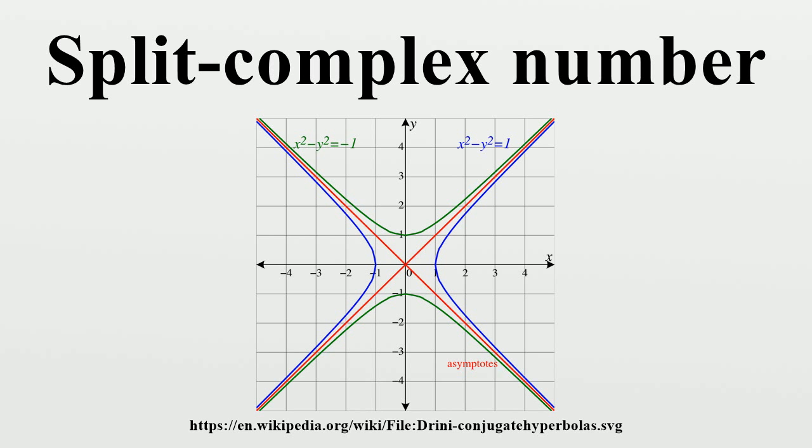If we denote the number z equals ae₊ plus be₋ for real numbers a and b by (a,b), then split complex multiplication is given by (a₁,b₁)(a₂,b₂) equals (a₁a₂,b₁b₂). In this basis, it becomes clear that the split complex numbers are ring isomorphic to the direct sum R⊕R with addition and multiplication defined pairwise.